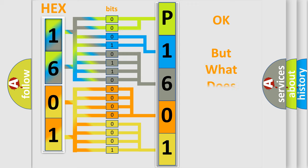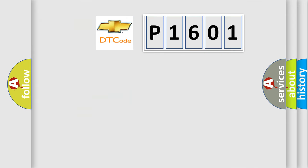We now know in what way the diagnostic tool translates the received information into a more comprehensible format. The number itself does not make sense to us if we cannot assign information about what it actually expresses. So, what does the Diagnostic Trouble Code P1601 interpret specifically for Chevrolet car manufacturers?